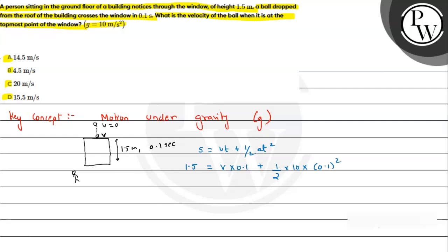Following the convention, the equation becomes: 1.5 equals 0.1v plus 5 times 10 to the minus 2.